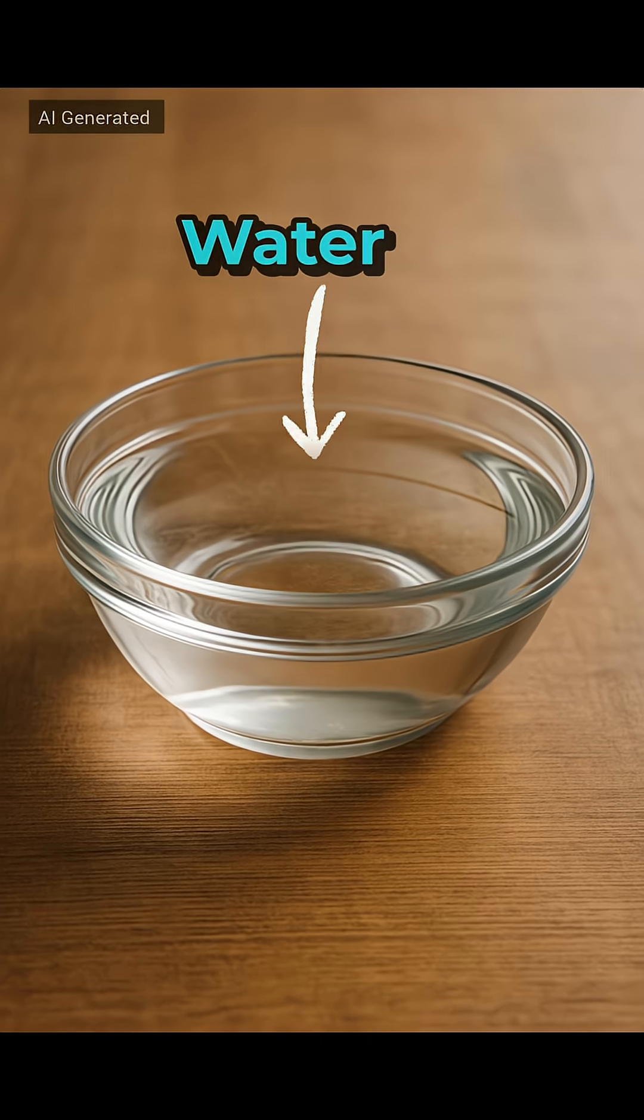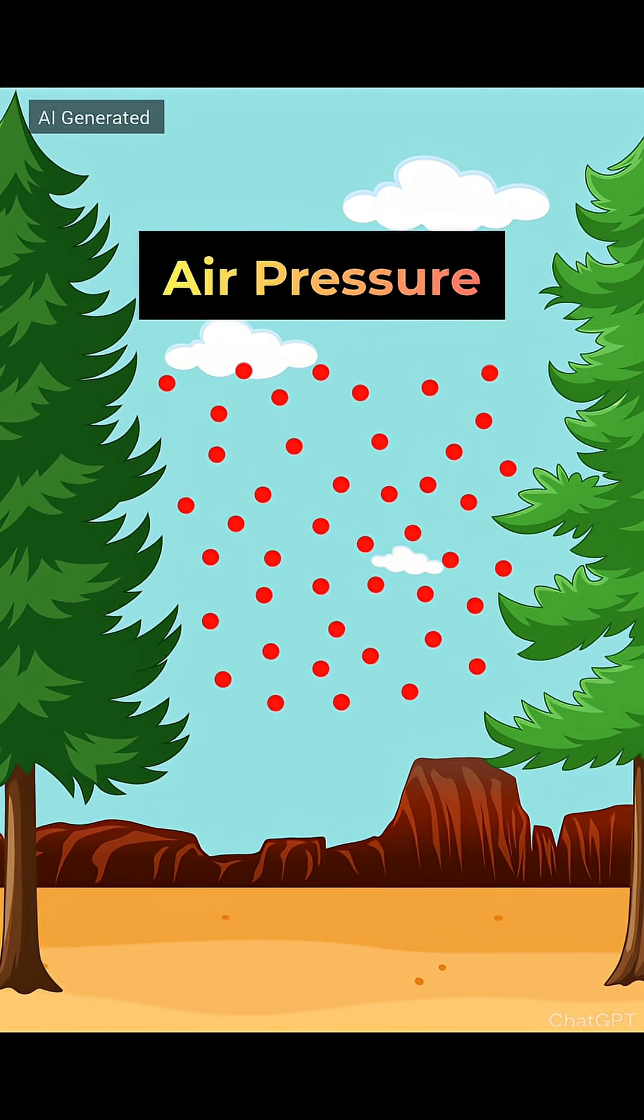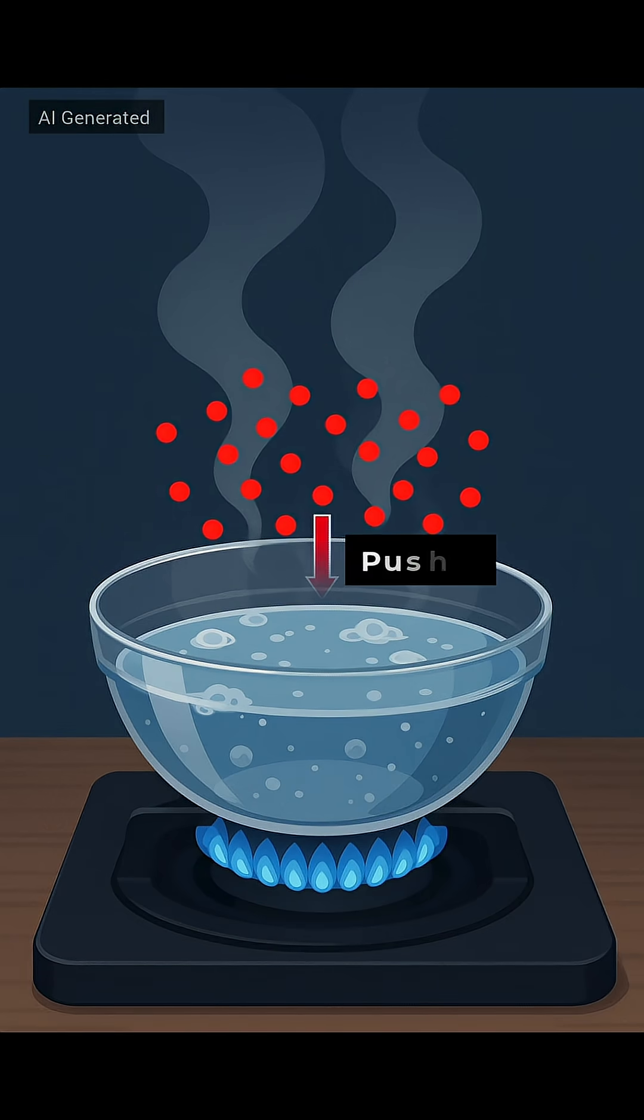Suppose there is some water in a bowl. Now at ground level, the air pressure is high. So when the water boils, it needs to get really hot because the air above that water is pushing down on it.